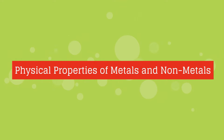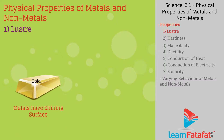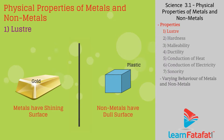Physical properties of metals and non-metals. First, luster: metals in their pure state have a shining surface, for example gold and copper. However, non-metals do not have such property.